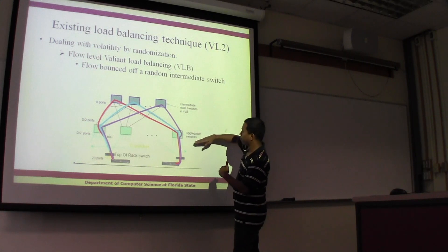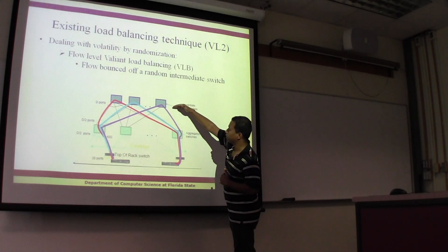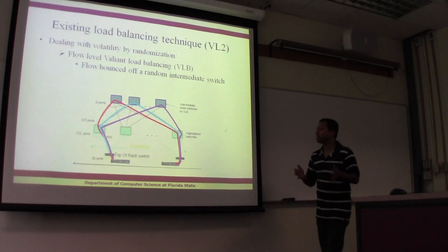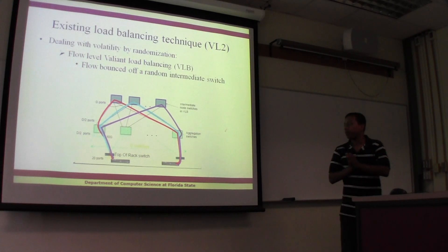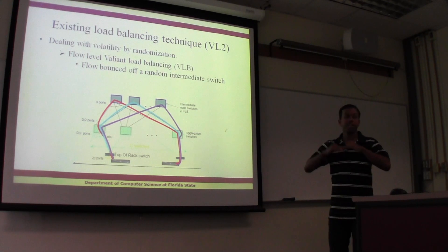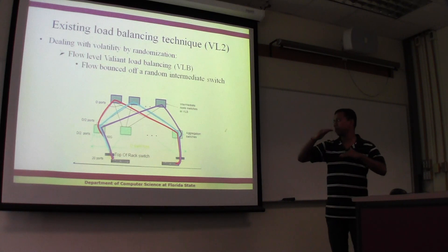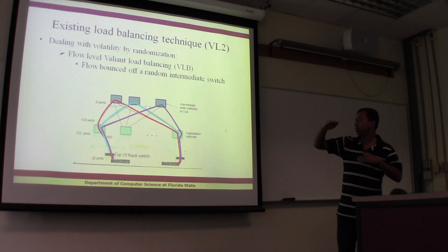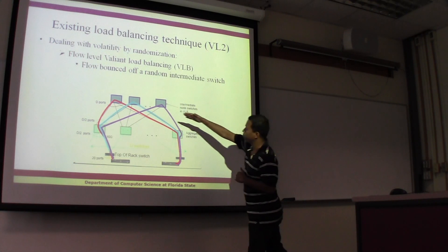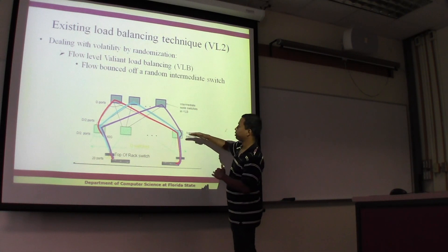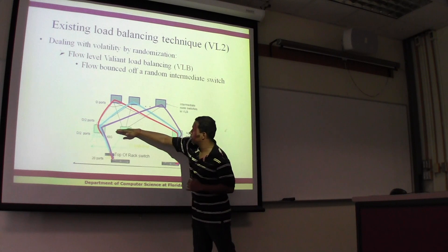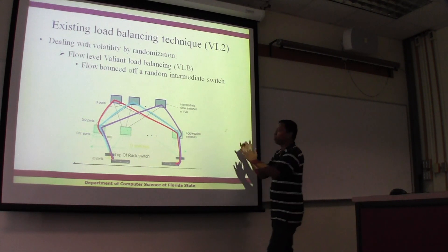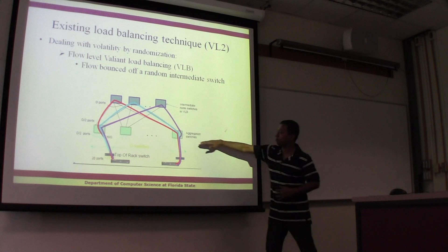In this fat-tree topology, we have aggregation switches and intermediate switches, because each one is connected to each of the others. Utilizing the property of the fat-tree, in the ascending phase — when the packet moves upwards — you have many choices, and once you reach the topmost switches you have a route to the destination. So once we reach the intermediate switches, we randomly choose one of them and bounce the packet off to the other one.